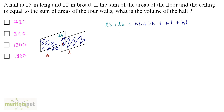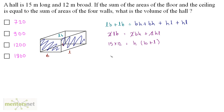So we have this equation. We can calculate H from this. We have 2 times LB equals twice BH plus twice HL. These 2s cancel out. We have L times B. Length is 15, breadth is 12. So we have 15 times 12 equals H times (B plus L), that's 12 plus 15. So H equals 15 times 12 divided by 12 plus 15, and that is 27.